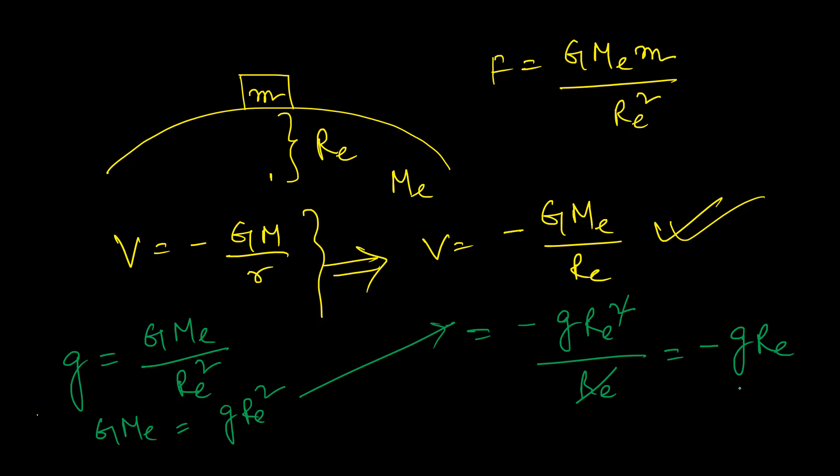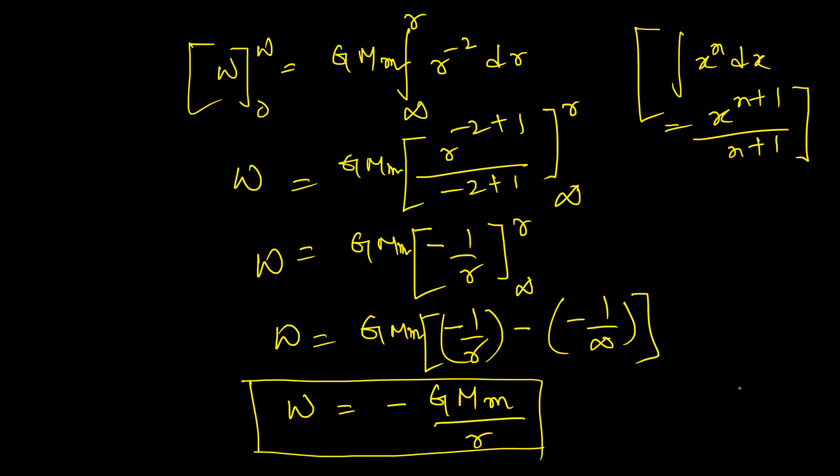To find gravitational potential energy, we use the same expression for work done: U = −G·M·m/r. This is the gravitational potential energy, denoted by U. When asked to find the gravitational potential energy on the Earth's surface, change the expression to U = −G·M_e·m/R_e.